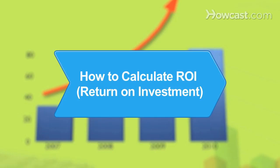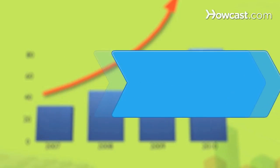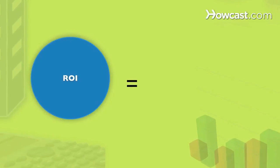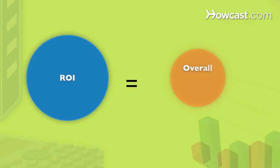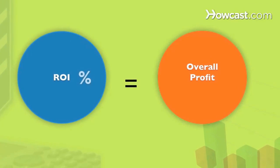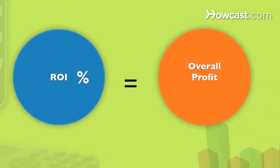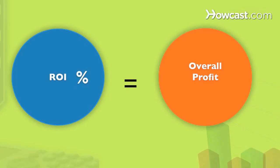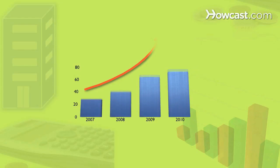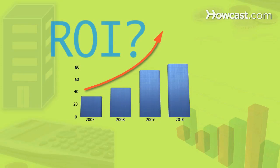How to Calculate ROI. Return on investment, or ROI, is the overall profit made on an investment expressed as a percentage of the amount invested — one of the most important gauges of business success. Learn how to figure out your ROI.